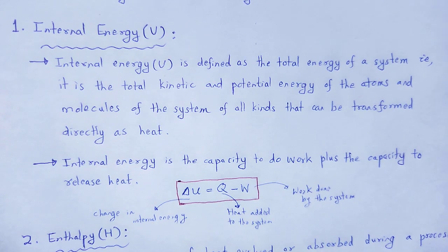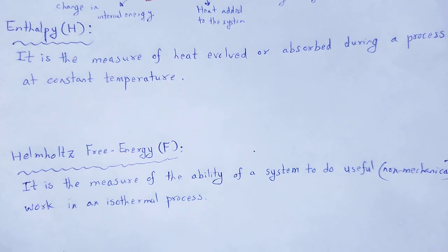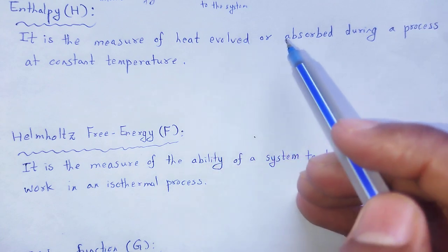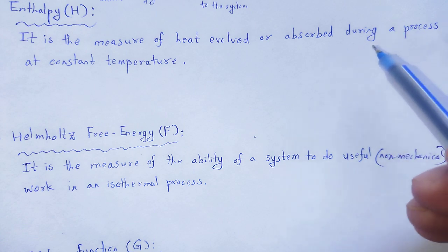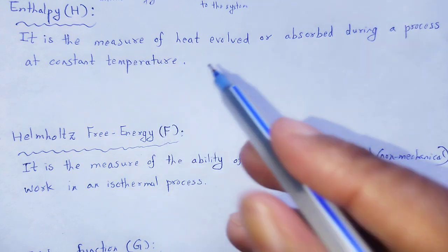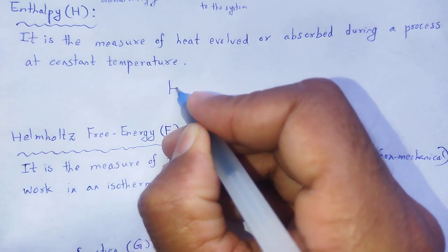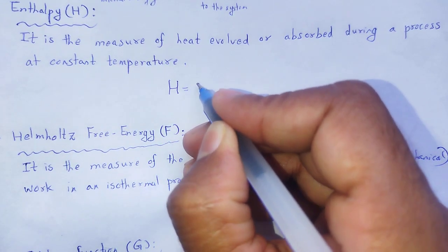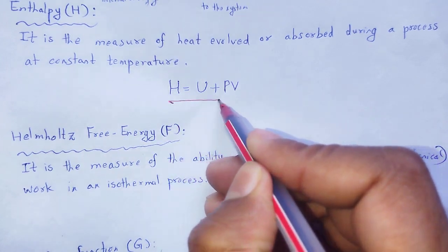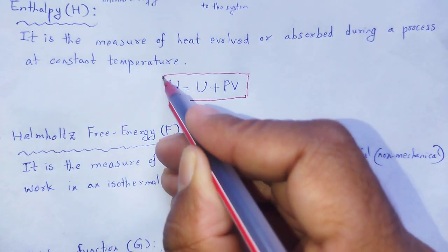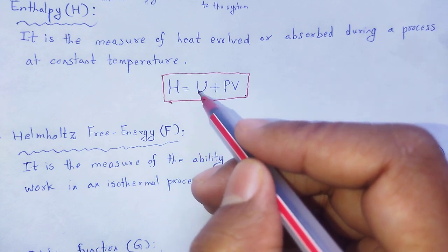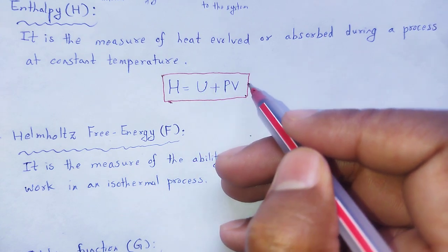Next, enthalpy. Enthalpy is the measure of heat evolved or absorbed during a process that occurs at constant pressure. Mathematically, enthalpy S equals internal energy plus pressure into volume: S equals U plus PV, where S is the enthalpy, U is the internal energy of the system, P is pressure, and V is volume.